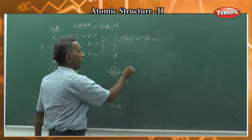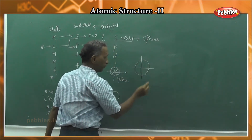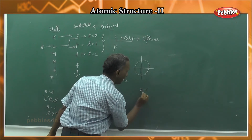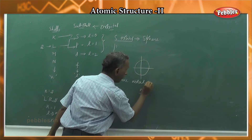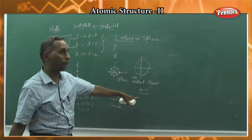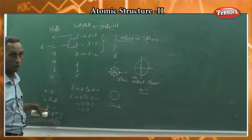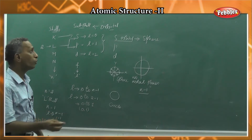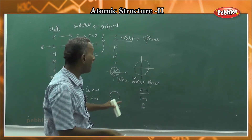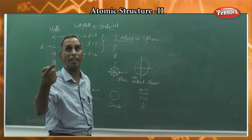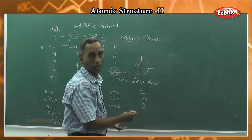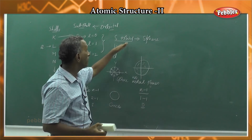For S orbital, since it is symmetric everywhere, the number of nodal planes is given by the formula N minus 1, where N is the principal quantum number. If N is 1, then 1 minus 1 equals 0, so the nodal surface is 0. That is the arrangement of the S orbital.